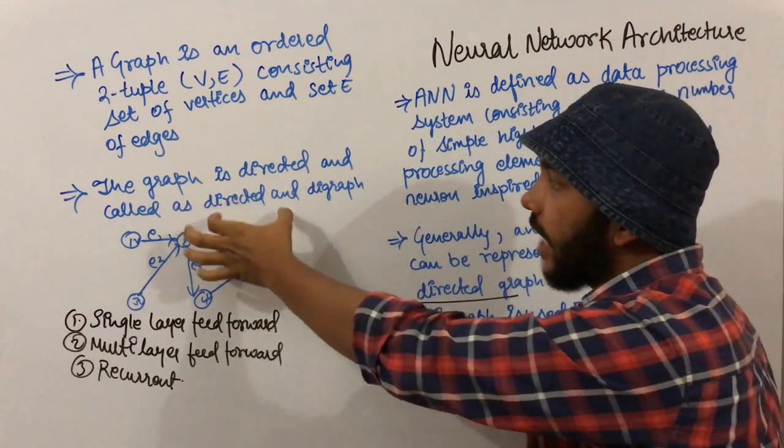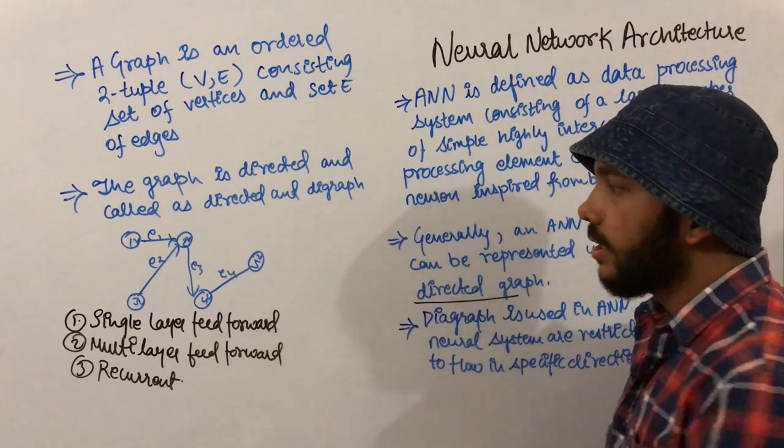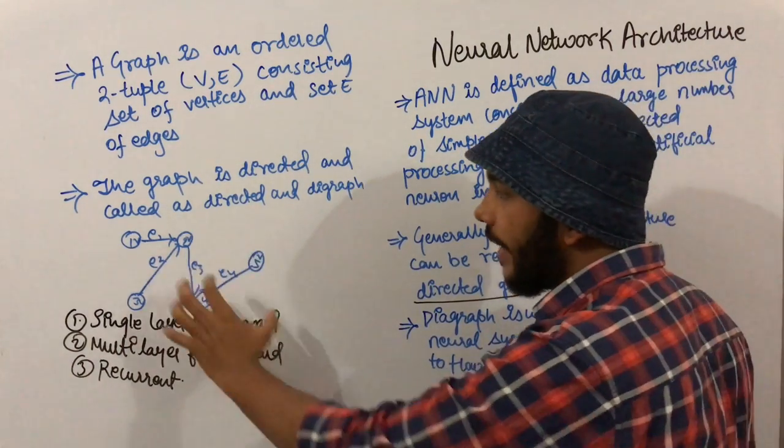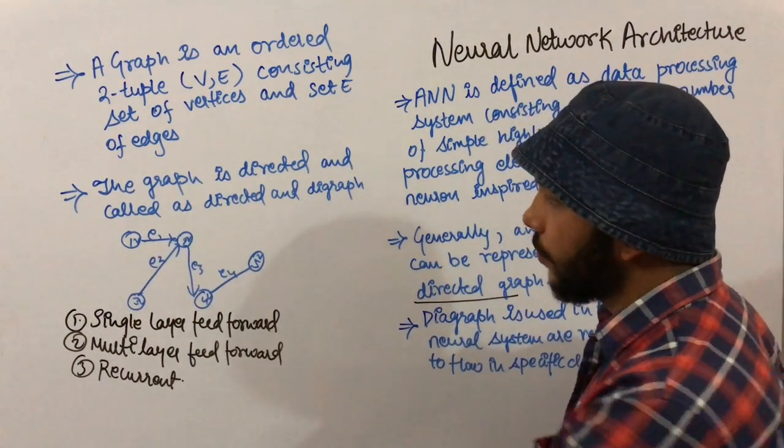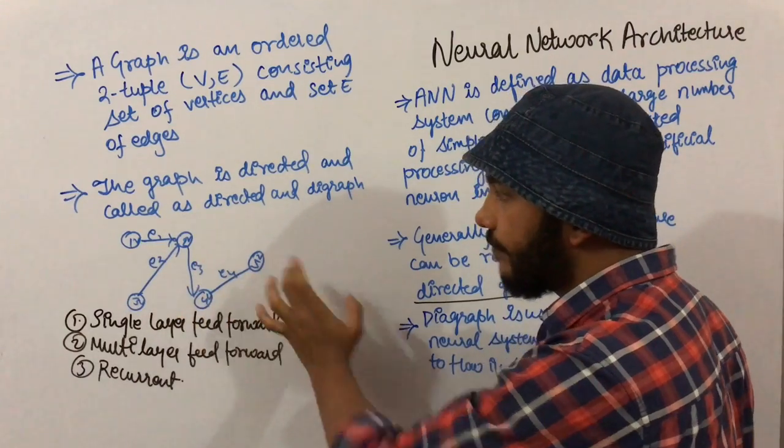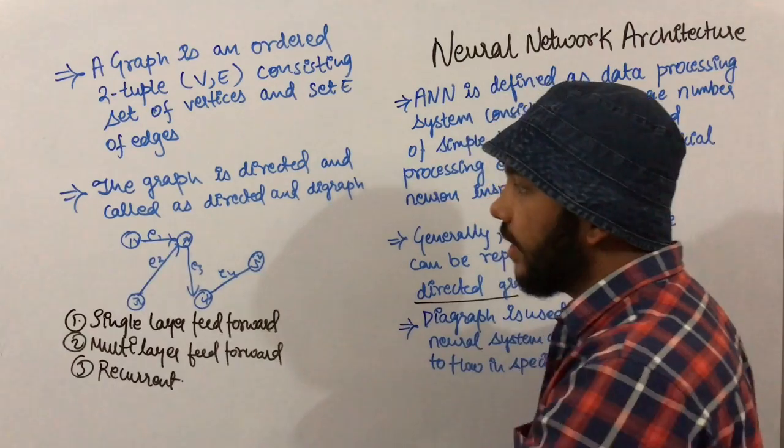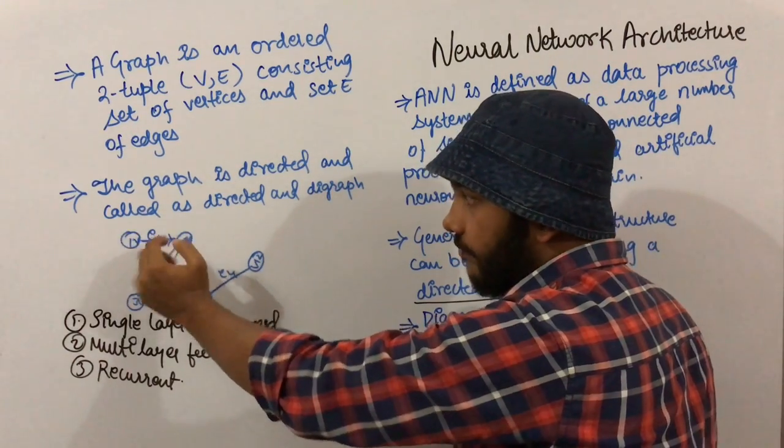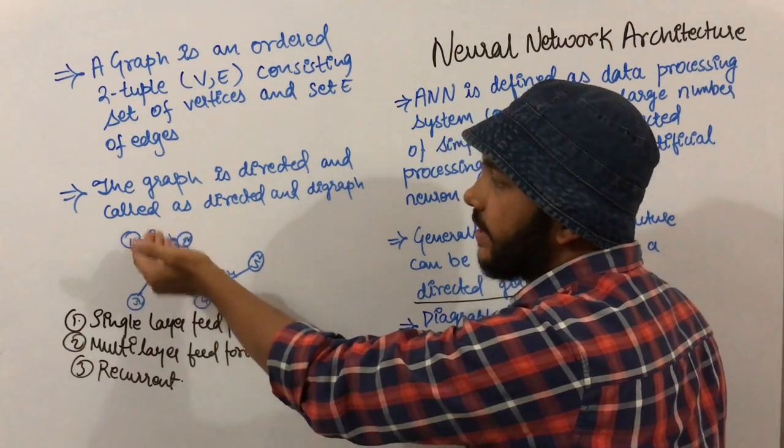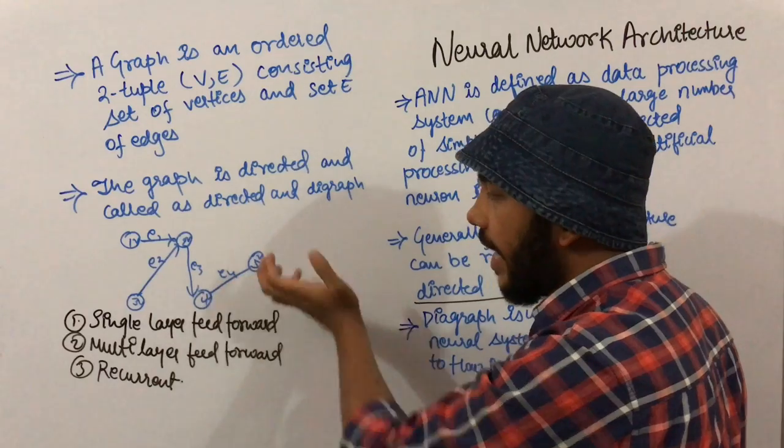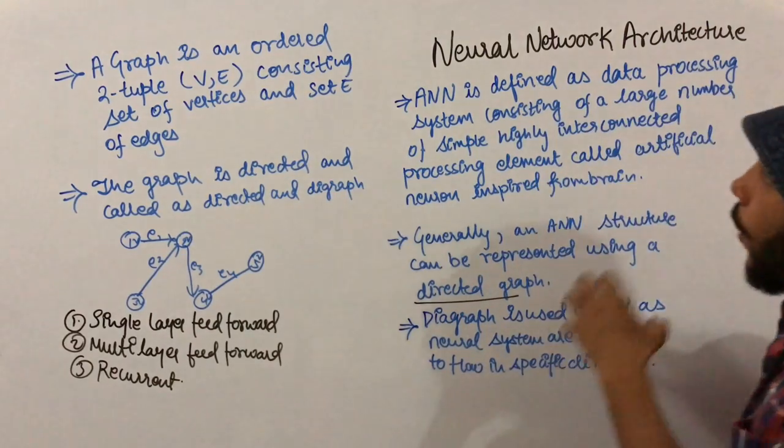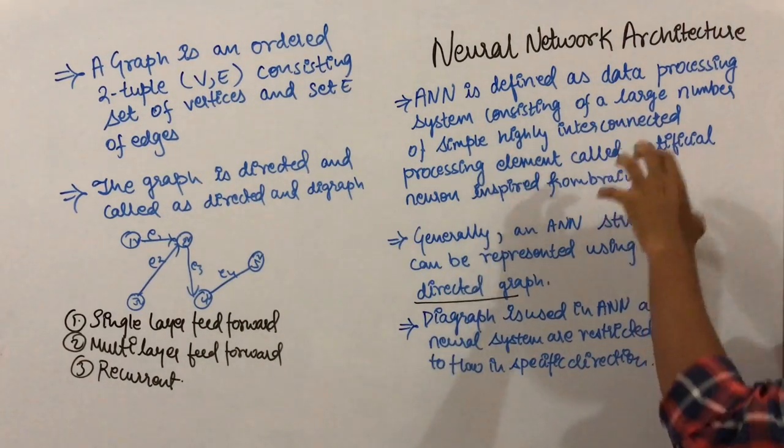Suppose we have a set of five neurons: first, second, third, fourth, fifth. Information flows from the first neuron to the second neuron with weights. We can represent these weights as E1, E2, E3, and so on.